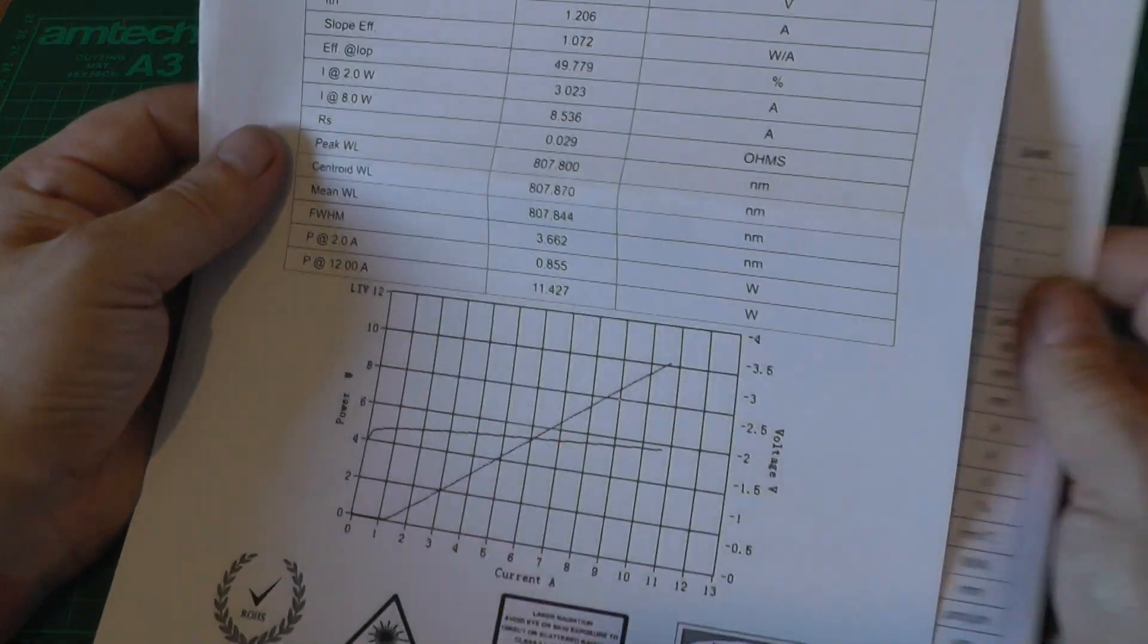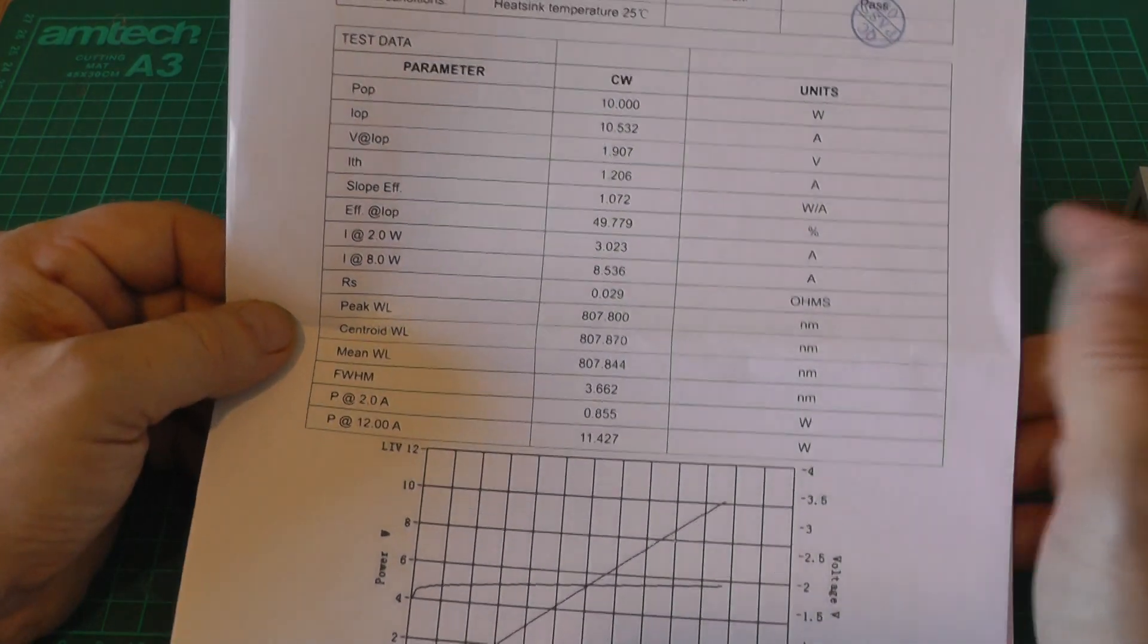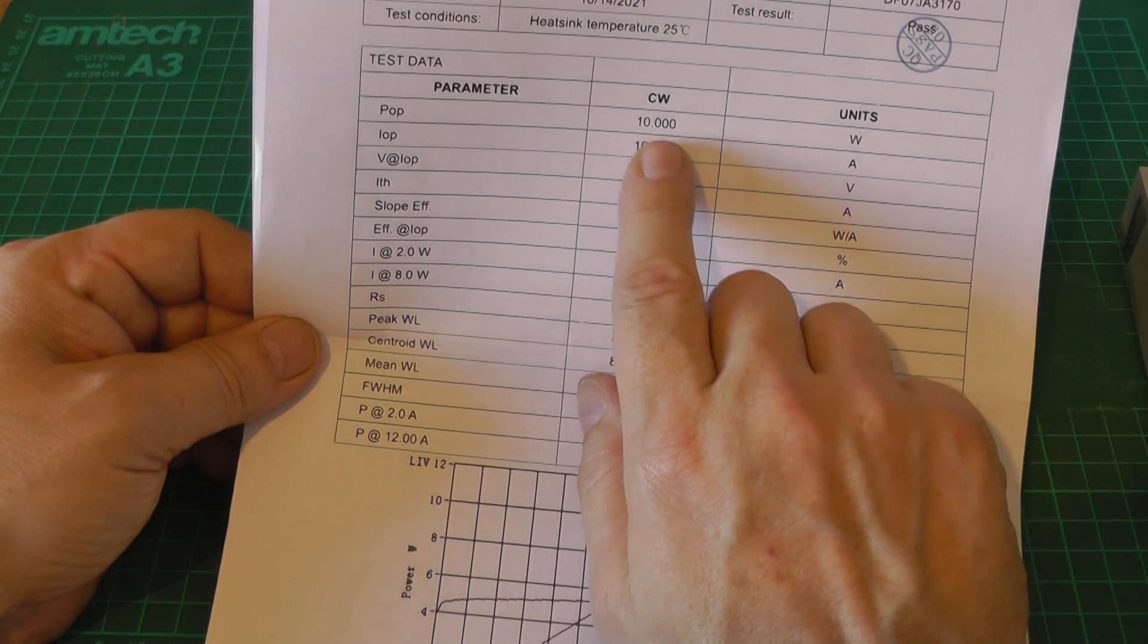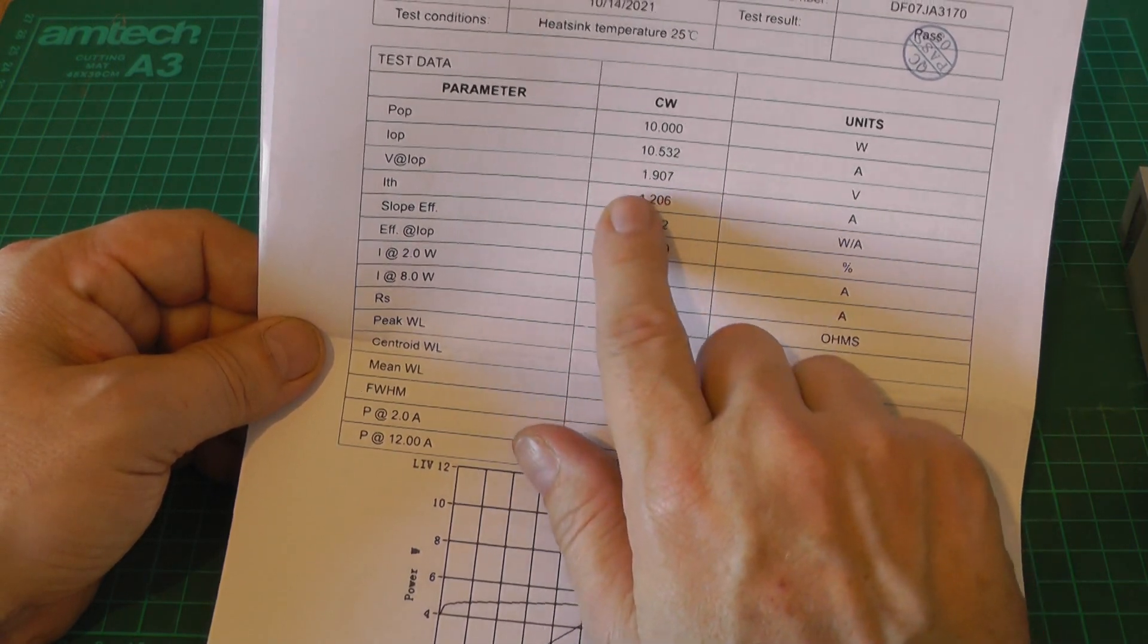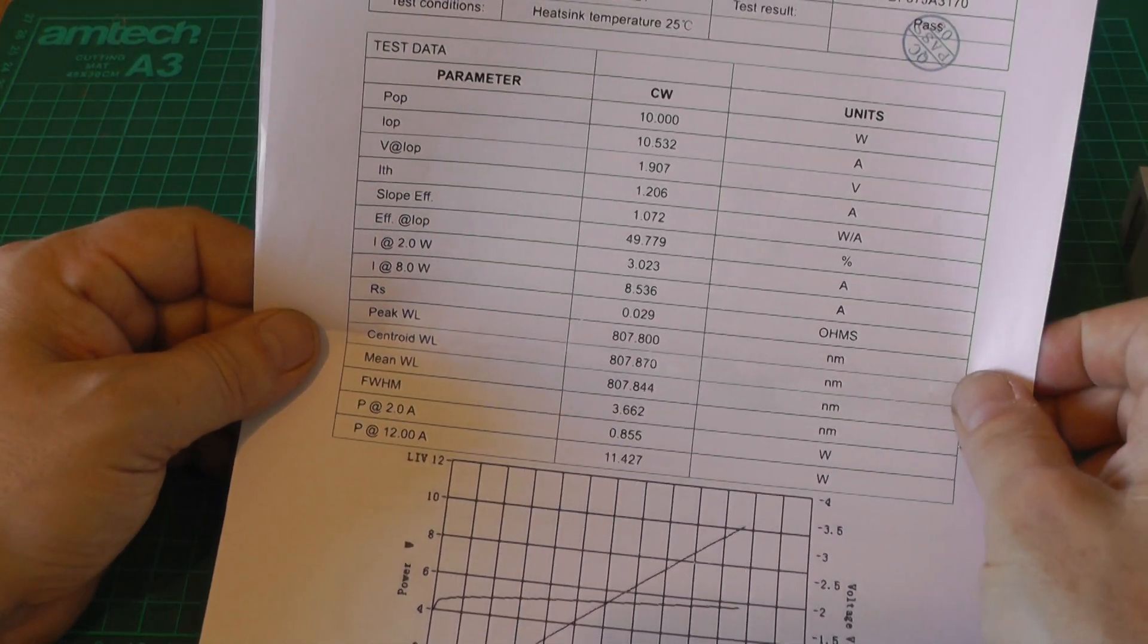These all come with an individual test sheet so we can see the actual test conditions when it left the factory, which is quite unusual for components. We can see that at 10 watts of output they were driving it at 10.5 amps with 1.9 volts as the voltage drop across the diode.